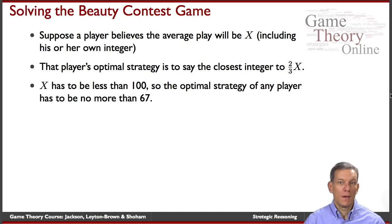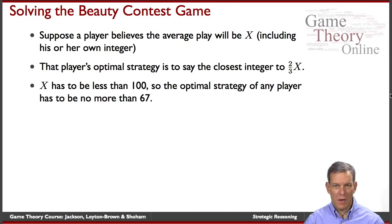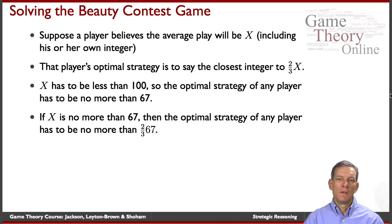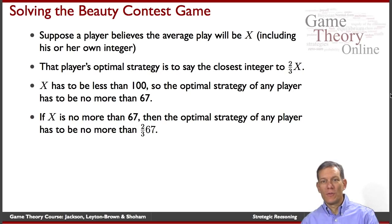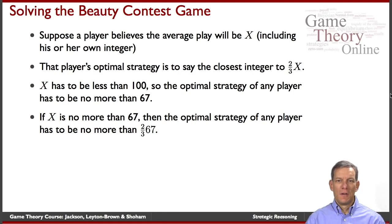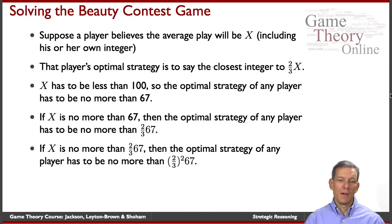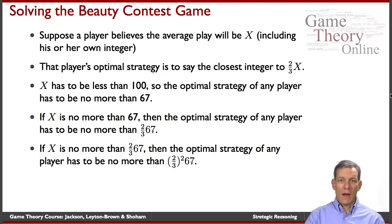If I think that everybody's rational, then I think that nobody should be naming an integer bigger than 67. That means I can't think the average is any higher than 67. So if the average X is no bigger than 67, then I should be naming no more than two-thirds of 67. If everybody else understands the game and understands nobody should name a number bigger than 67, then nobody should be naming numbers bigger than two-thirds of 67. We keep going — everybody's going to want to be a little bit lower than everybody else's guess, so wherever the average is, you should be lower than that.